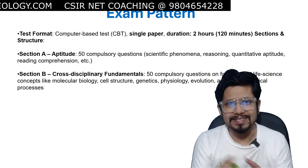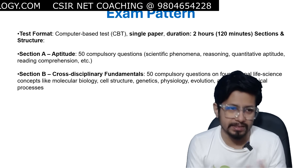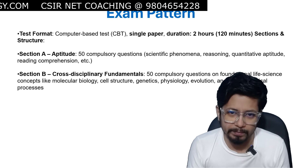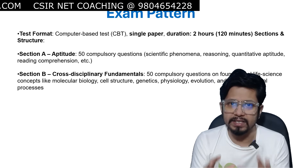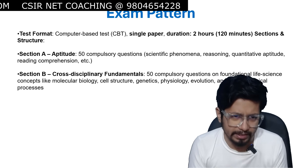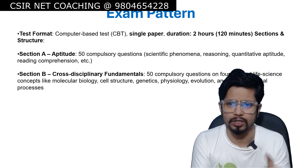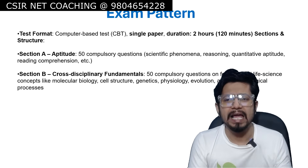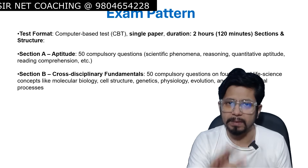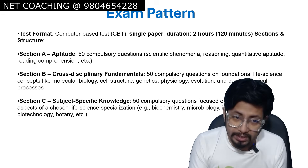Section B is also compulsory. Cross-disciplinary fundamental questions are asked here — 50 compulsory questions on fundamentals of life sciences like molecular biology, cell structure, genetics, physiology, evolution, and basic biological processes. So Section A plus Section B gives 50 plus 50, totalling 100 marks.